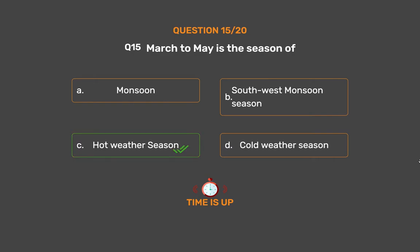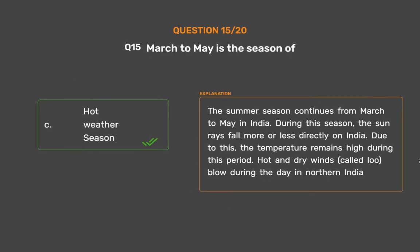The correct answer is Option C: Hot weather season. The summer season continues from March to May in India. During this season, the sun rays fall more or less directly on India. Due to this, the temperature remains high and hot and dry winds blow during the day in northern India.